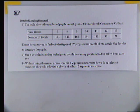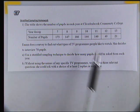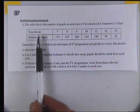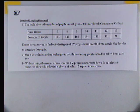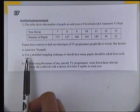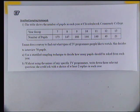The table shows the number of pupils in each year at Clivenbrook Community College. Emma does a survey to find out what types of TV programs people like to watch. She decides to interview 70 pupils. So there's a whole school's worth of people here, but she's only going to choose 70 people to give her surveys to. Use a stratified sampling technique to decide how many people should be asked from each year. This is asking us to work out if the proportions were kept the same, how many year sevens we would have to choose, how many eights we would have to choose, to make a total of 70.